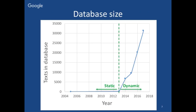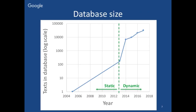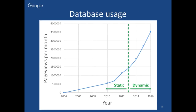Coming back to the specific project: this is a graph of database size by year. I've highlighted the point in 2013 when we changed from a static system to a dynamic one. On a linear scale it looks like we did absolutely nothing from 2005 to 2013 — no visible change. Only on a log scale graph can you see that over those nine years we added several hundred texts. But this increase has been absolutely dwarfed by the subsequent increase to quickly thousands and tens of thousands of texts. And we have seen since then an exponential increase in utilization of the system.